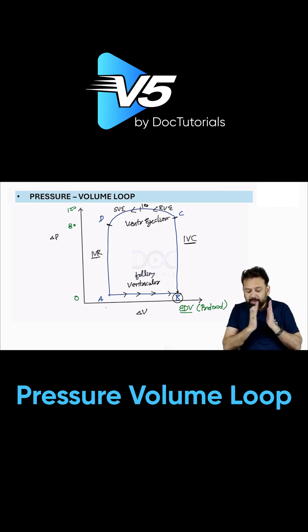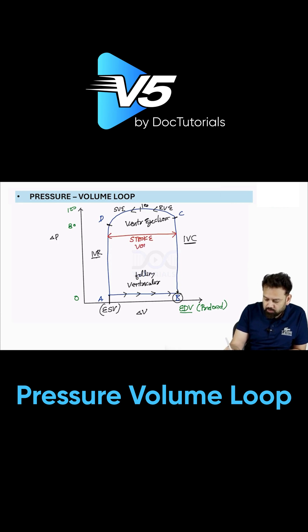Now once again, from A to B, volume is increasing. From what? What is the minimum volume after ejection? End systolic volume. So point A will be end systolic volume. And we have discussed in detail, end diastolic volume minus end systolic volume will be your stroke volume.